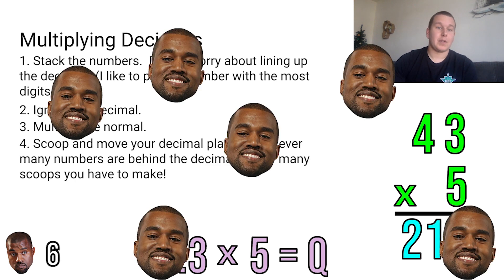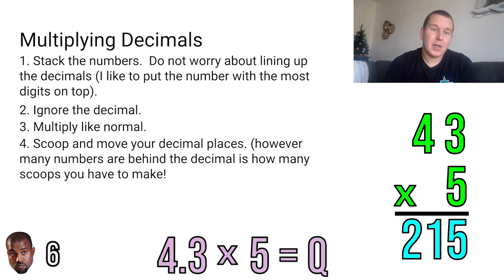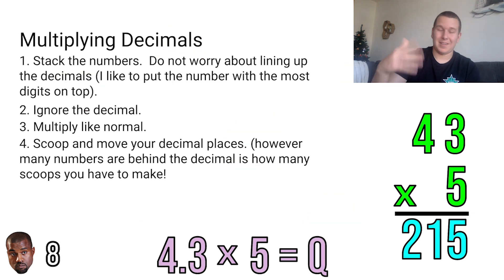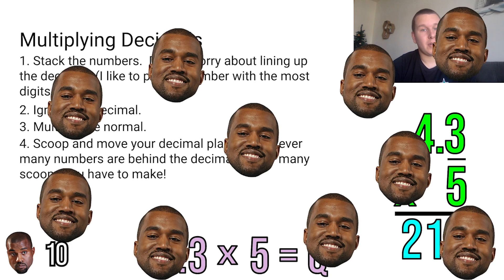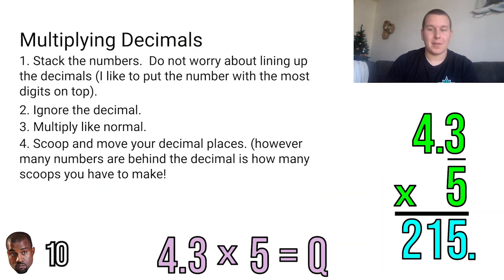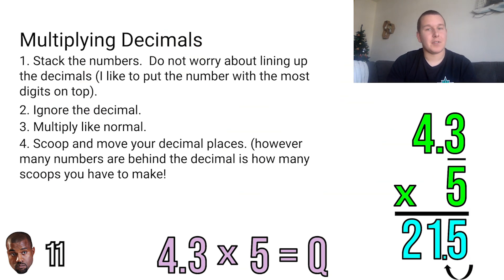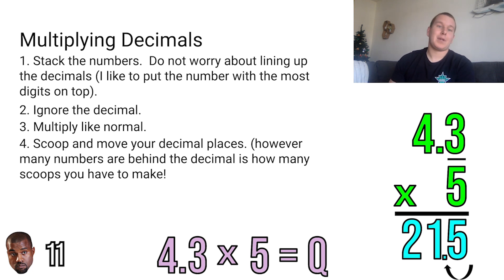Now we're going to scoop and move your decimal places. However many numbers are behind the decimal is how many scoops you have to make. We need to bring that decimal back in here and count how many numbers are behind the decimal. In this case we only have one number behind the decimal, so we're going to scoop just once. We put a decimal behind the 5, because that doesn't change the value of this whole number, and we scoop over once to give us 21 and 5 tenths. Now if we were multiplying two decimals together, we would count the decimals behind both numbers. We do need to be careful about that.